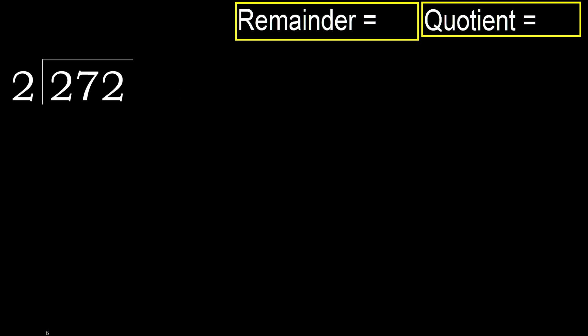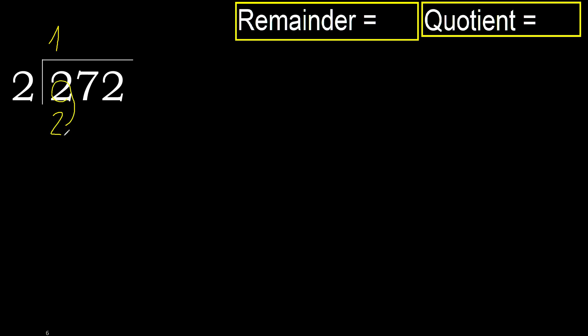272 divided by 2. 2 is not less, therefore work with 2. 2 multiplied by which number is nearest but not greater? 2 multiplied by 2 is 4, which is greater. 2 multiplied by 1 is 2, which is not greater.